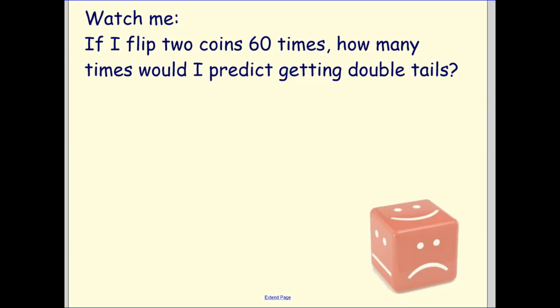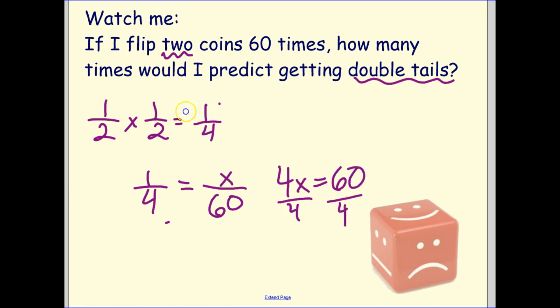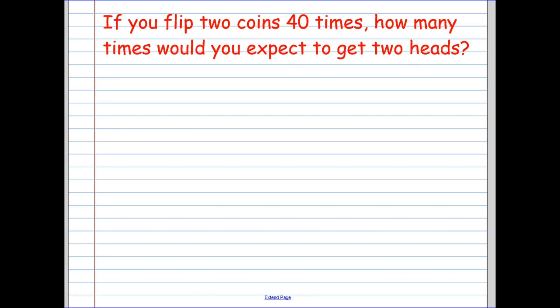Okay. What about compound probability? If I flip 2 coins now 60 times, how many times would I predict getting double tails? Okay. Well, let me calculate the probability first. The probability of getting one tail is 1/2. The probability of getting another tail is 1/2. And when I multiply them together, I get 1/4. So my probability of getting two tails is 1/4. So now I'm going to set up my proportion with 1/4, my probability on one side. And my prediction on the other side. So I want to know how many times out of 60. So I'm going to set it up like that. Cross multiply. I'm going to get 4x equals 60. Divide by 4. X equals 15. I'd predict that 15 times. That's going to happen. Go ahead and pause and copy.